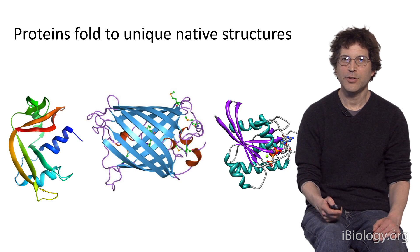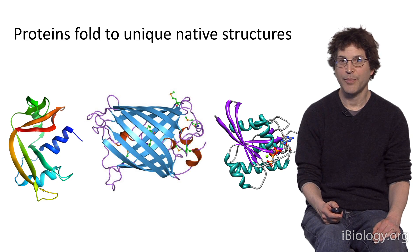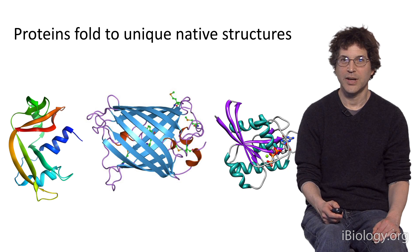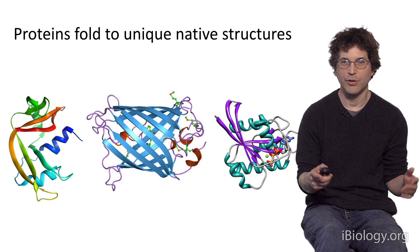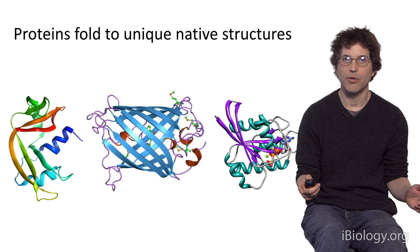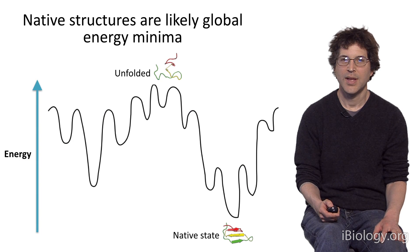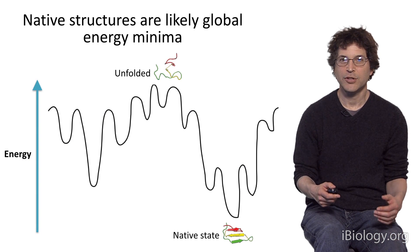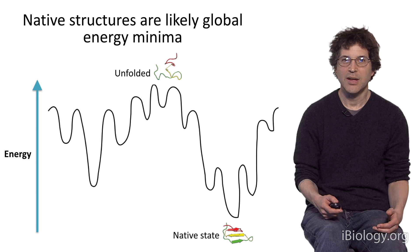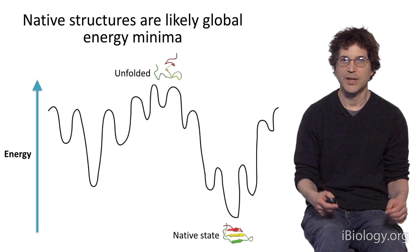Proteins function by folding to unique native structures, and some representative native structures are shown on this slide. Proteins are encoded in genes in our genomes. Each gene encodes one protein, and the proteins fold up to these unique native structures in order to carry out their biological function. Native structures of proteins are likely the lowest energy states for the protein sequence.